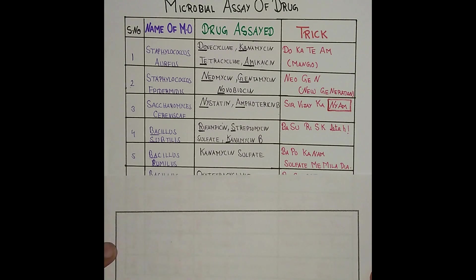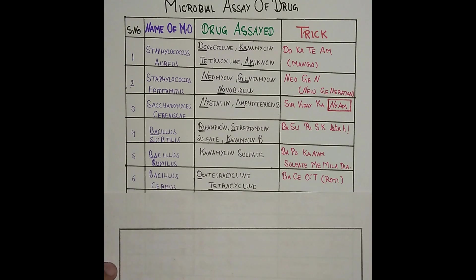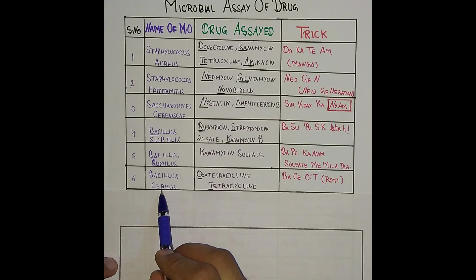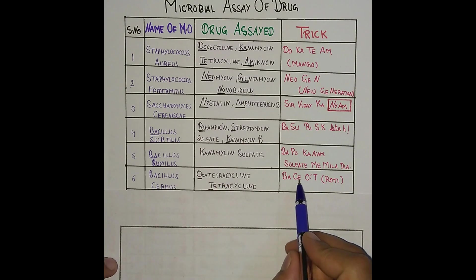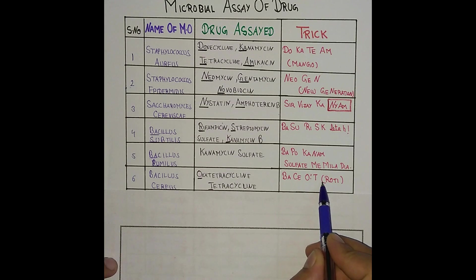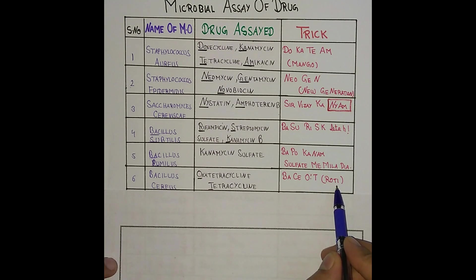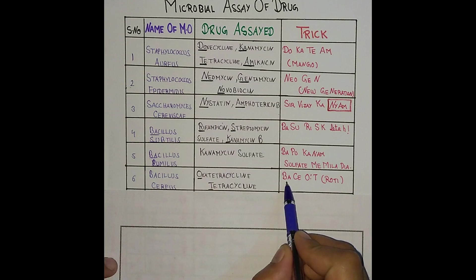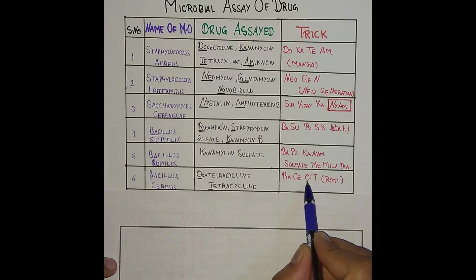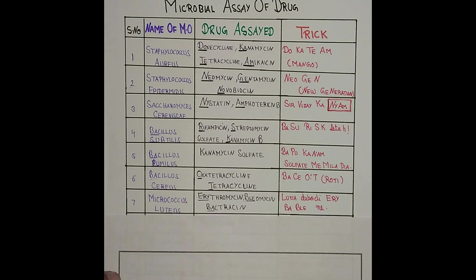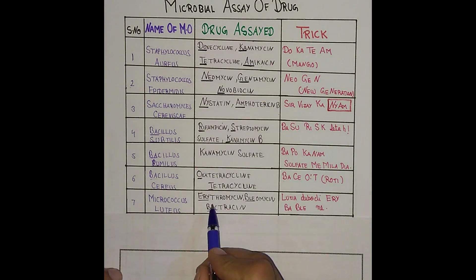The next one is Bacillus cereus, and there are two drugs: Oxytetracycline and Tetracycline. The trick is 'Base OT' — OT resembles roti (chapati): BA-CE for Bacillus cereus, and OT for Oxytetracycline/Tetracycline.